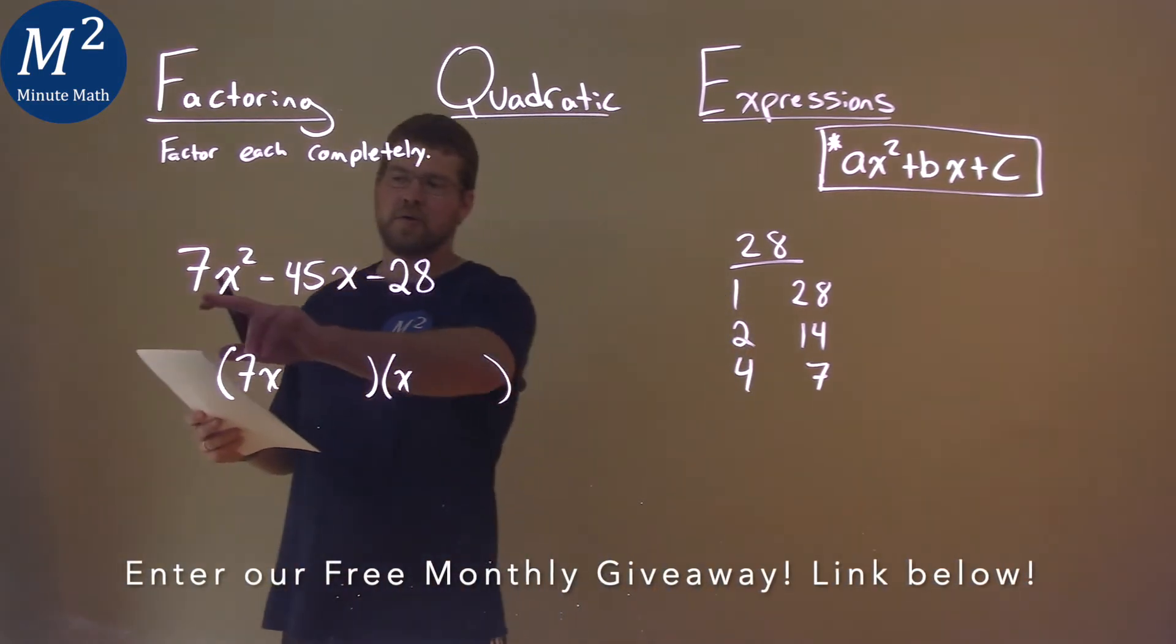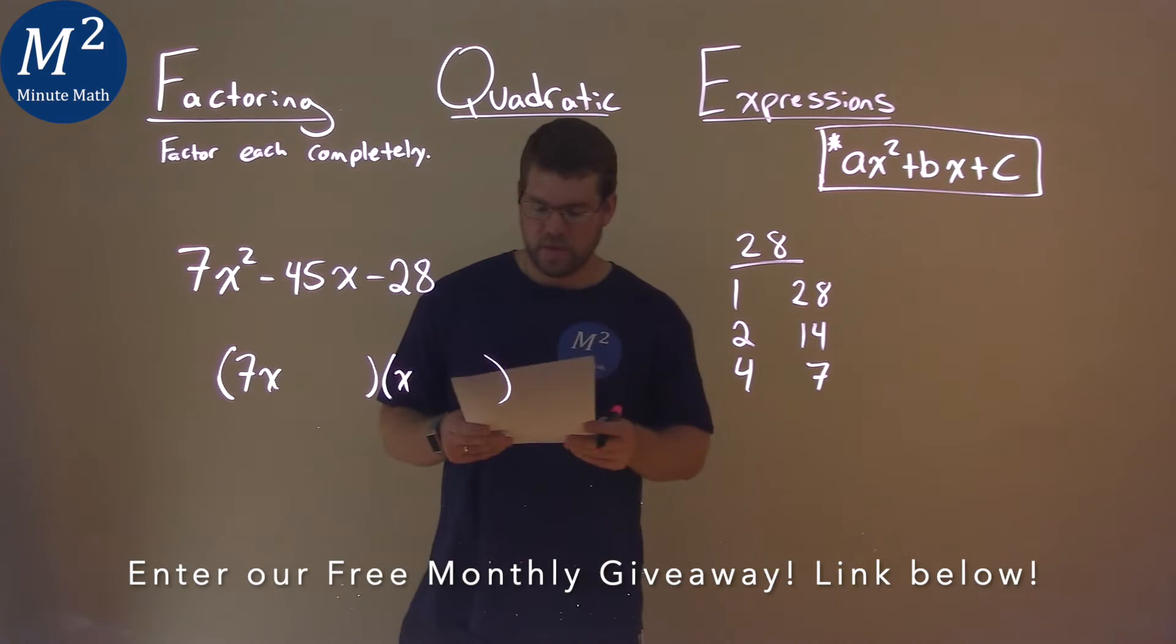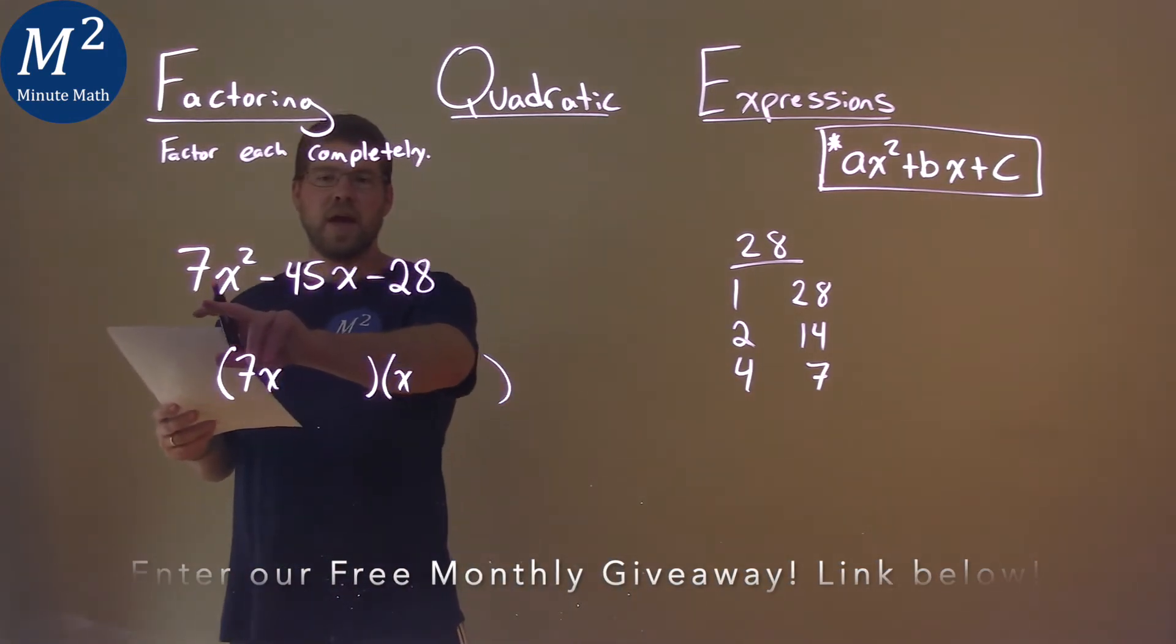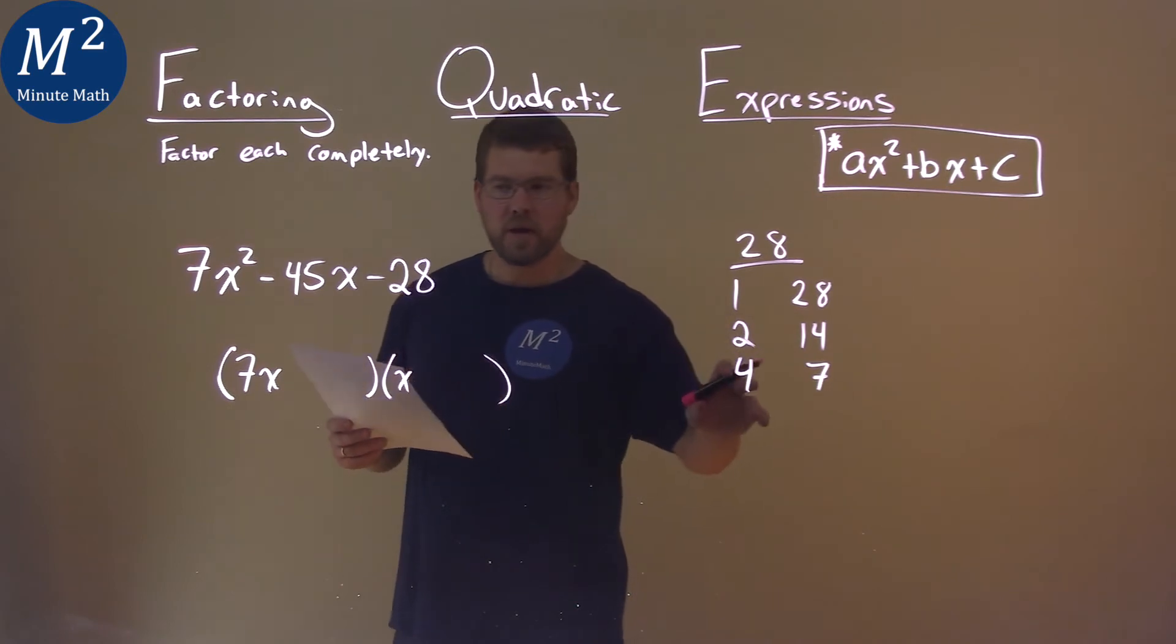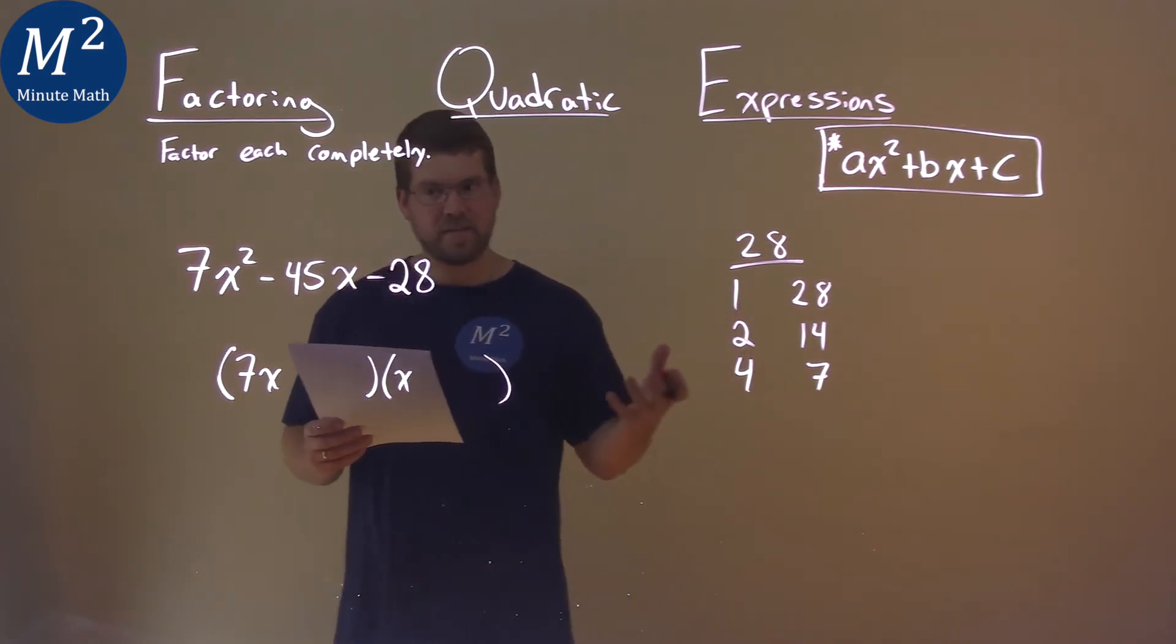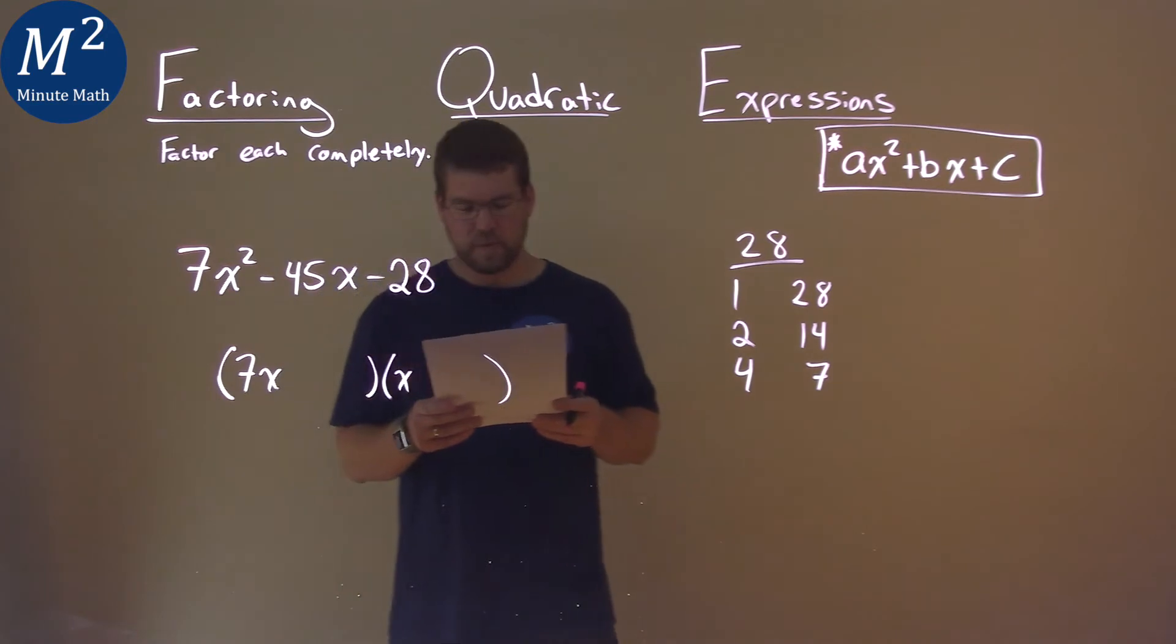So now tricky part. Go back to the a value. We have to ask ourselves: a times which one of these numbers plus the other number gets us a -45?